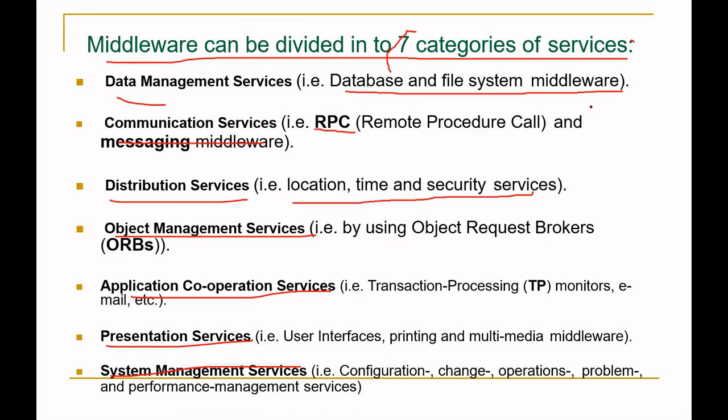Object request brokers invoke required objects — using methods within objects to call particular procedures. Application cooperation services include transaction processing (TP) monitors, email, and other protocols such as FTP and HTTP, which work at the application layer. These monitor all transactions. Presentation services cover user interfaces, printing, and multimedia middleware. System management services handle configuration, change, operation, problem, and performance management.